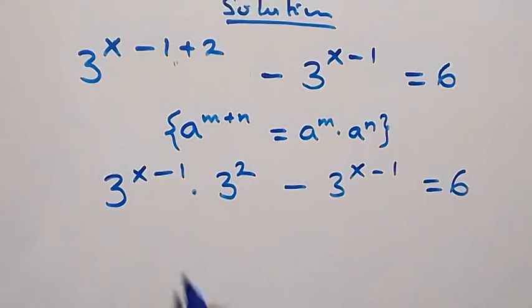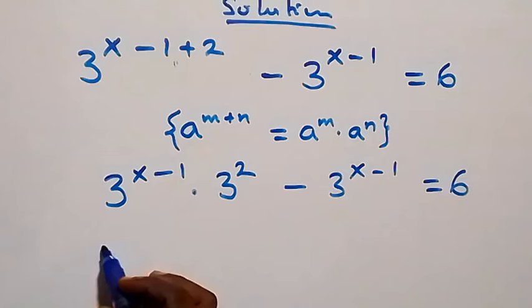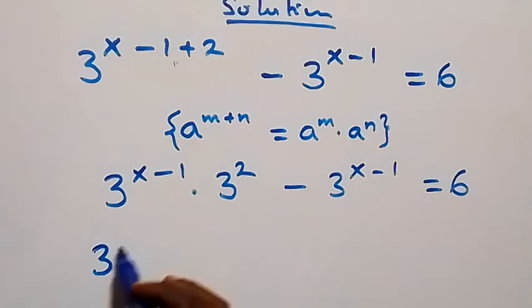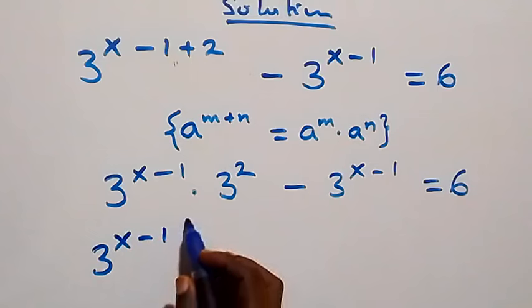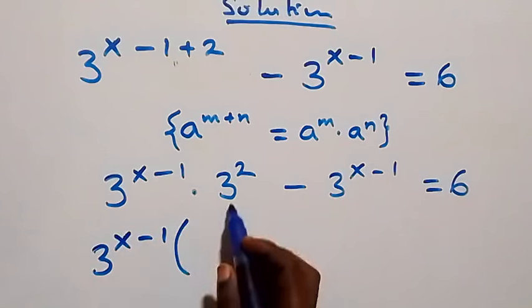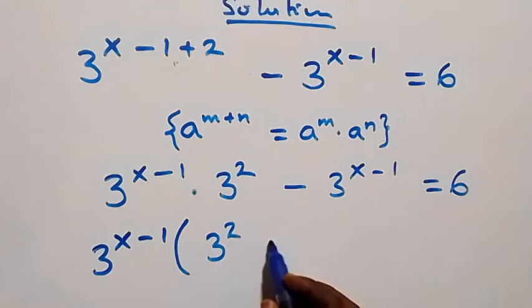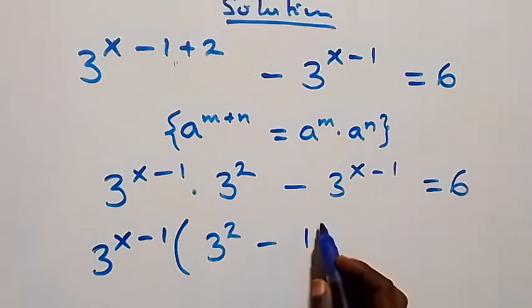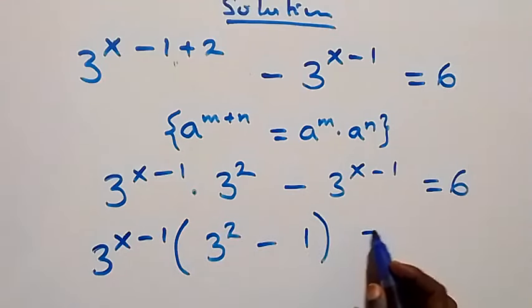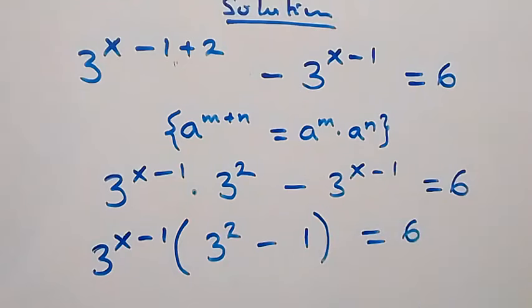Here, 3 raised to power x minus 1 is common. When we factor it out, we have 3 raised to power x minus 1 into bracket — we are left with 3 squared, then minus 1 — close bracket, equals to 6 on this side.